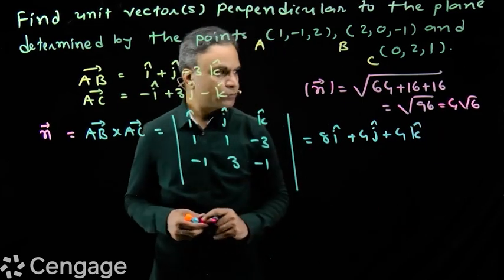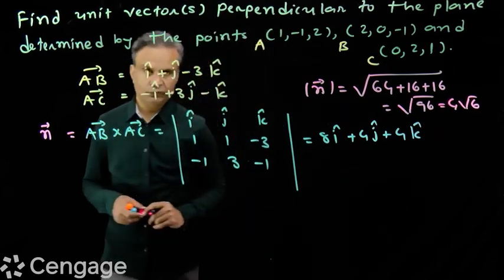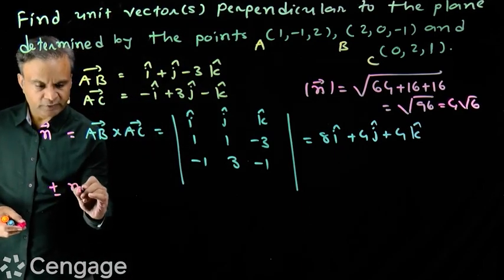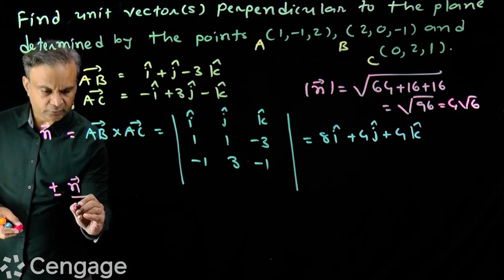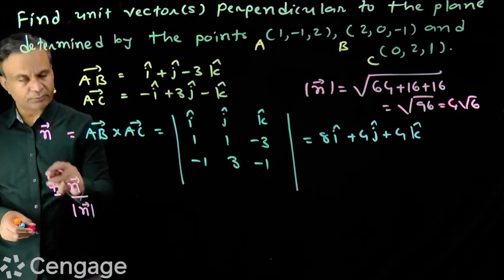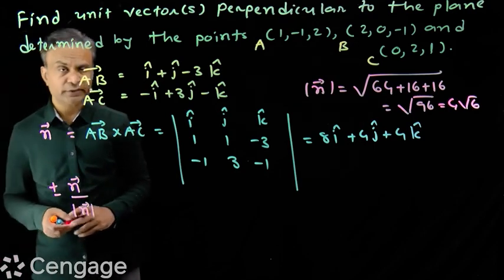So unit vectors perpendicular to the plane will be ±n over modulus of n. We have plus minus because we will have two vectors in opposite directions.